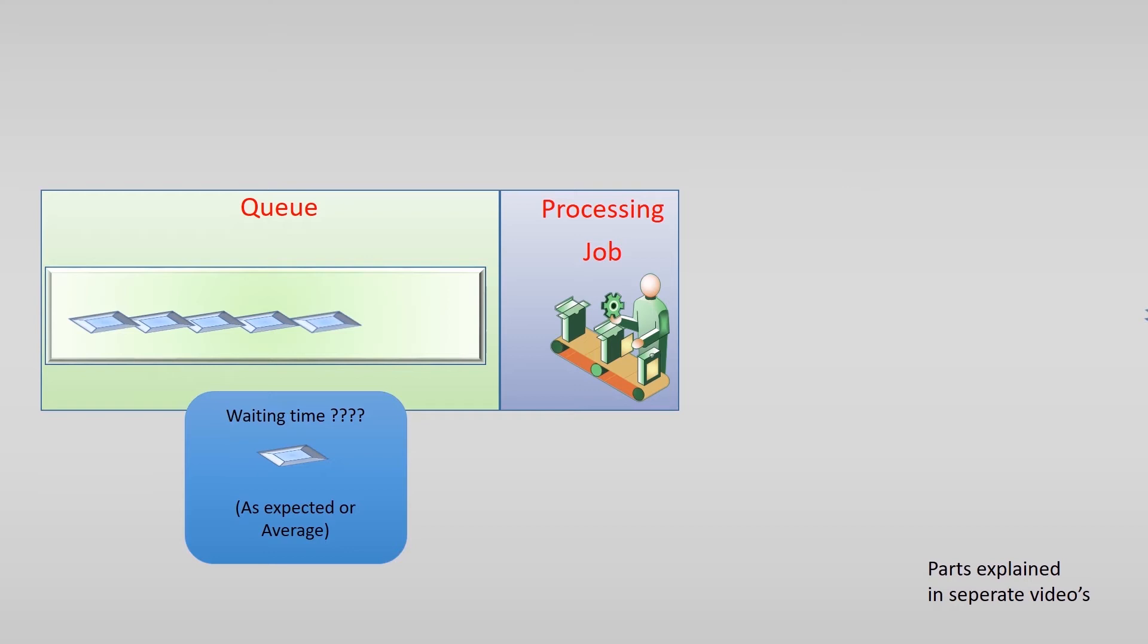Kingman has shown that three elements influence the time spent in this queue. First of all, of course the time it takes to process a job is very important. The longer it takes to process a job, the longer the process is occupied and new orders are prevented from processing.